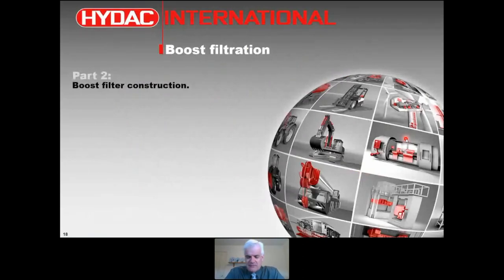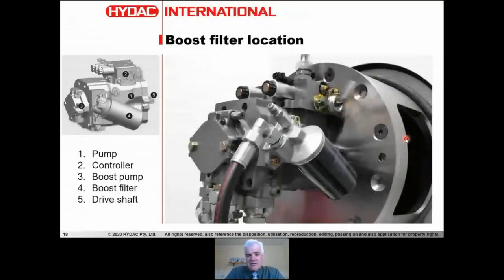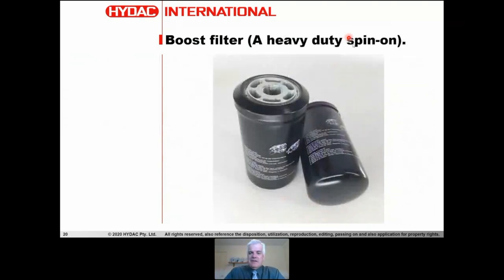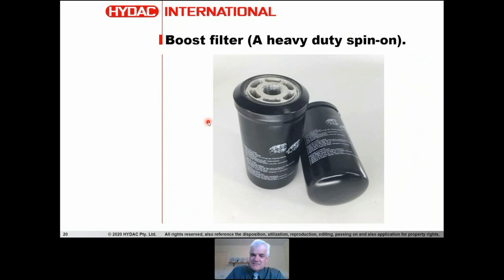Here are some application photos to help identify what a boost filter looks like. This is a closed loop transmission pump, and you can see a spin-on filter on the side — that is the boost filter. It's an intrinsic part of the transmission in this case, though not always. The filter is often a spin-on, but a typical return-line spin-on element won't do because it's not rated to the required pressure. This is a specialized spin-on with very thick material all the way around.